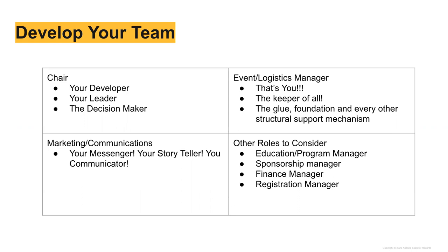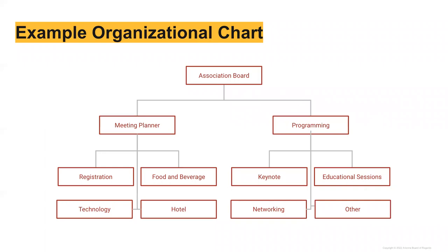The next slides show an example of an association org chart. At the top is the association board — the ultimate decision makers. On one side is the meeting planner with key functions like registration, food and beverage, technology, and hotel. On the right side is programming, which is generally volunteer-driven by association members. They are responsible for selecting the keynote, networking sessions, educational sessions, and ancillary activities such as gamification.